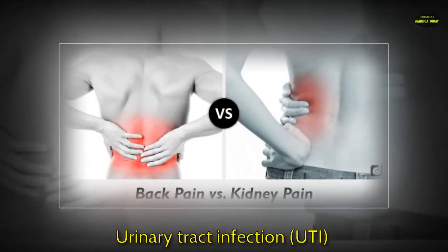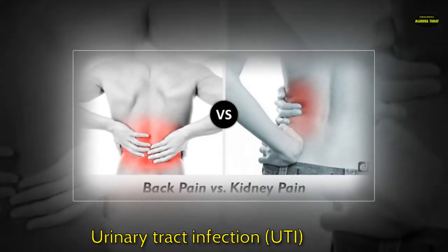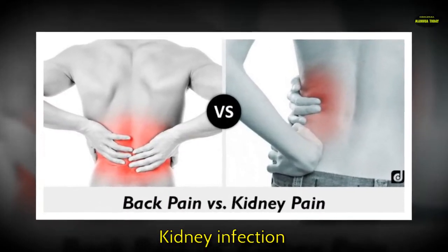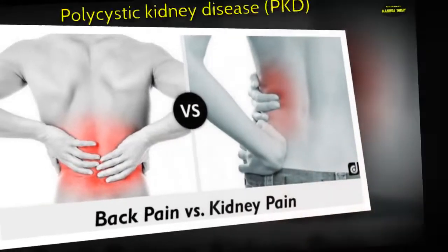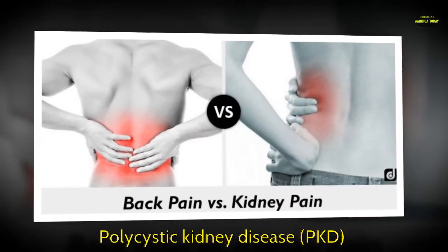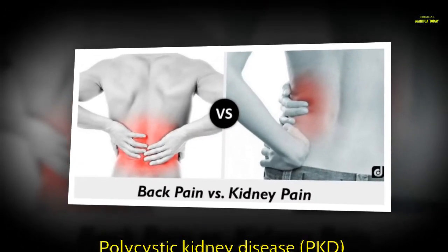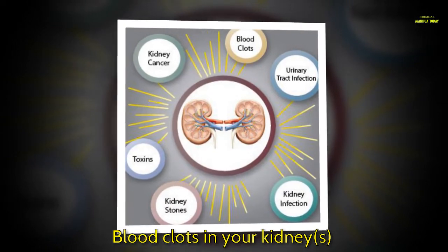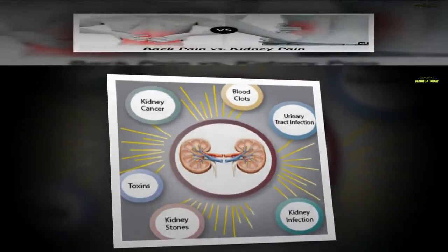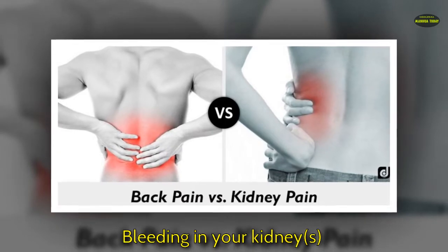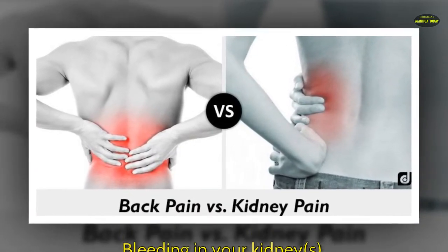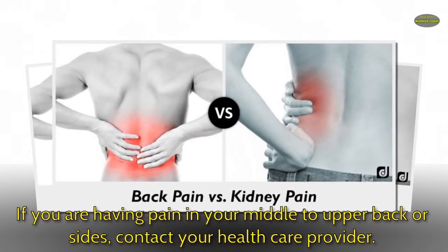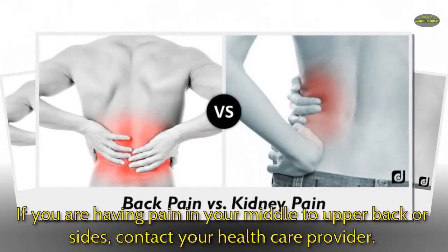Urinary tract infection (UTI), kidney infection, polycystic kidney disease (PKD), blood clots in your kidneys, and bleeding in your kidneys. If you are having pain in your middle to upper back or sides, contact your health care provider.